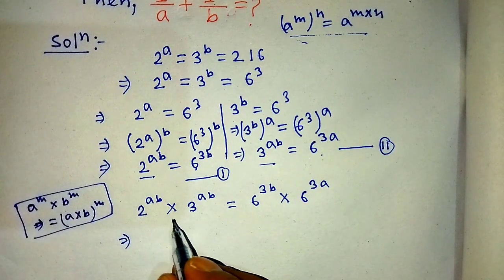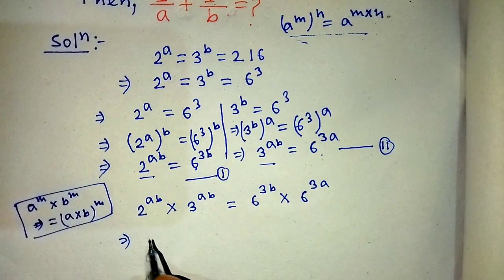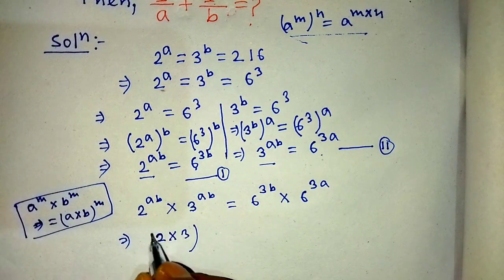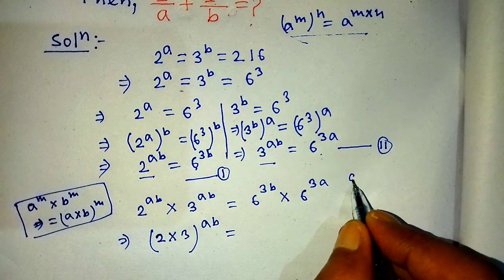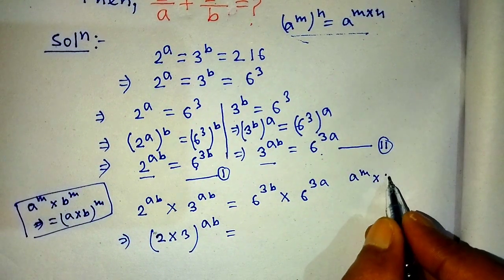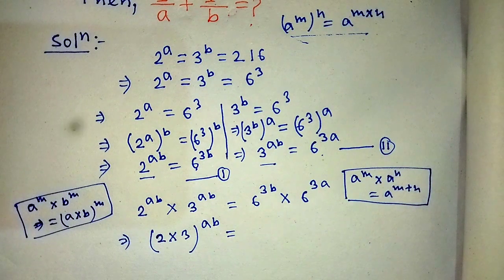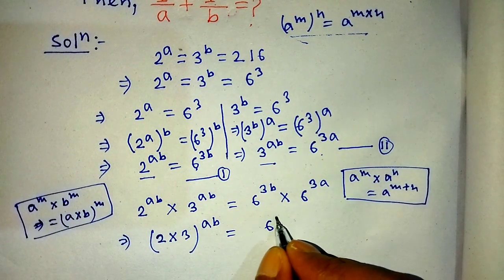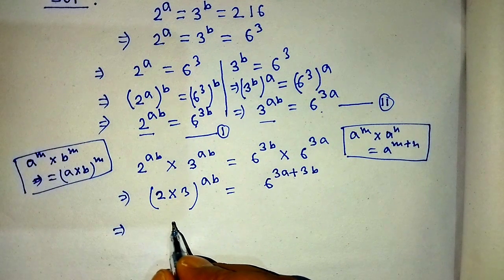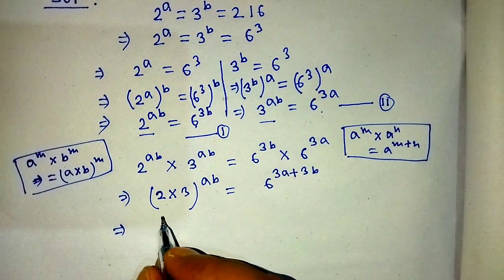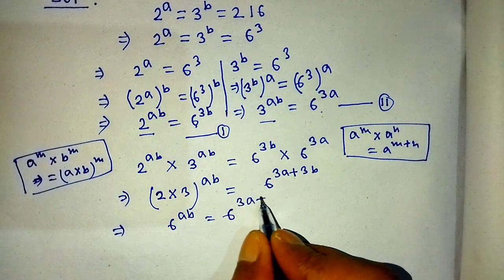On the left hand side, we apply the formula A^M × B^M = (A×B)^M, giving us 2 times 3, whole to the power AB, which equals 6 to the power AB. On the right hand side, we apply the formula A^M × A^N = A^(M+N), giving us 6 to the power 3A plus 3B. So we have 6 to the power AB is equal to 6 to the power (3A + 3B).